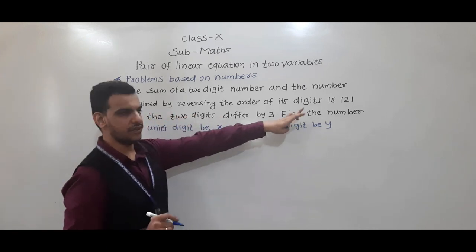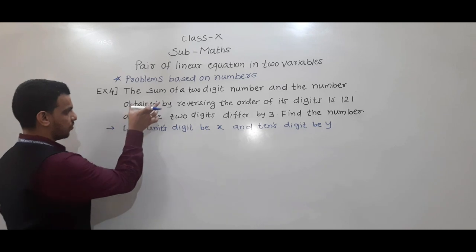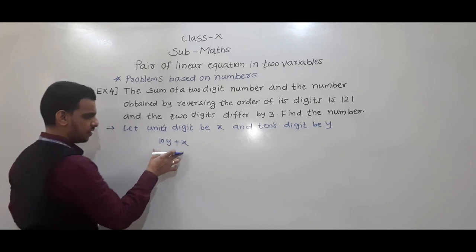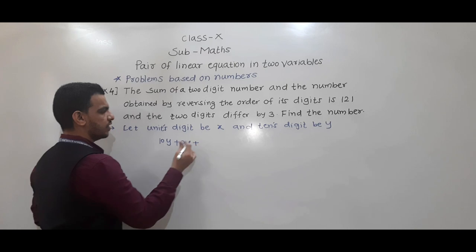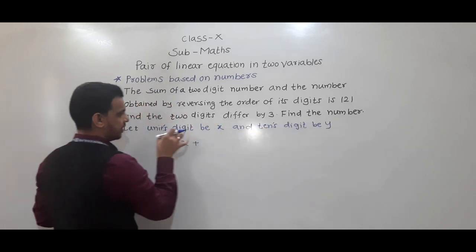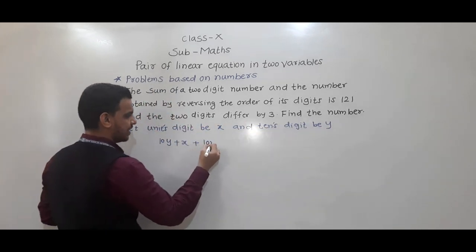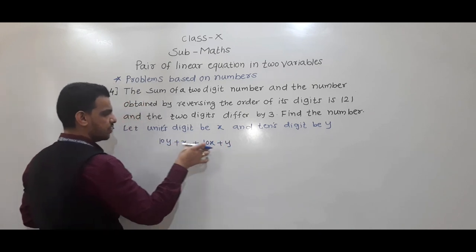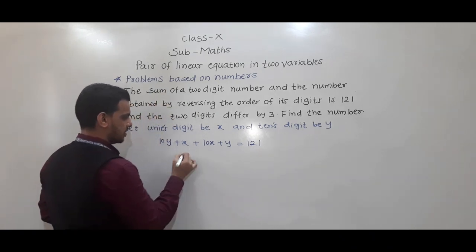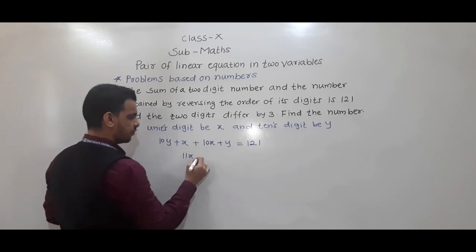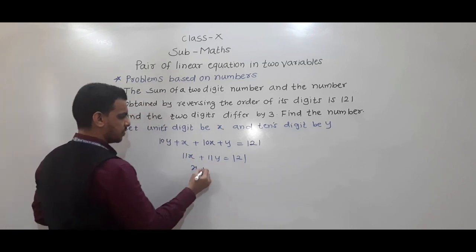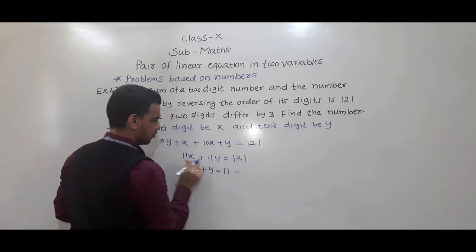If we reverse the digits, the number is 10x plus y. The sum of these two numbers is 121. So from the first condition: (10y plus x) plus (10x plus y) equals 121. Simplifying: 11x plus 11y equals 121. Dividing by 11: x plus y equals 11. This is equation 1.